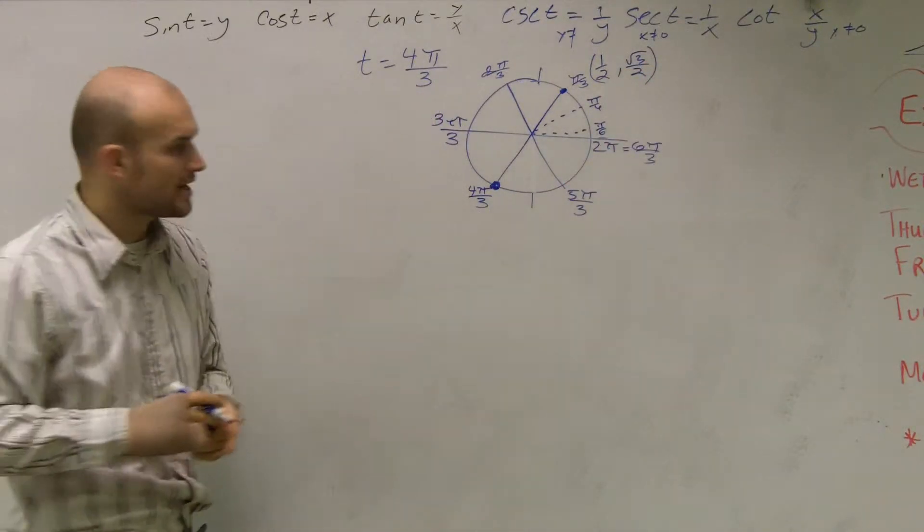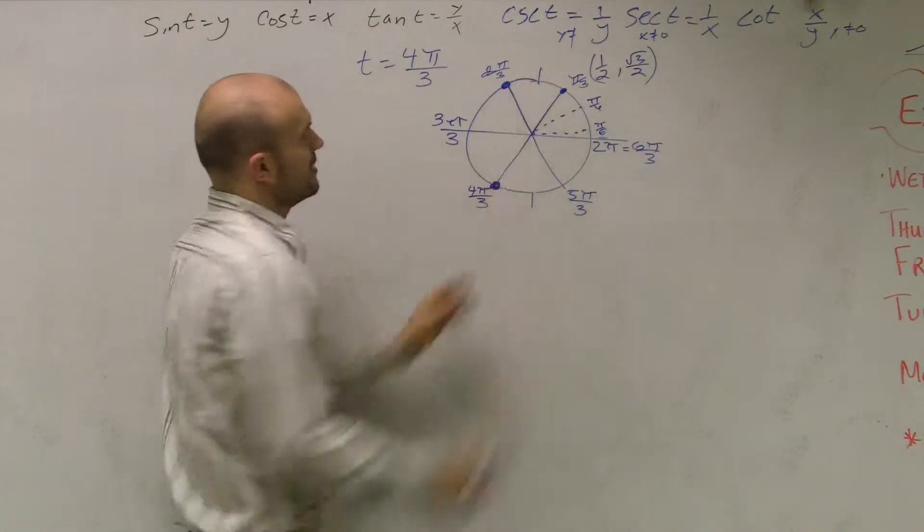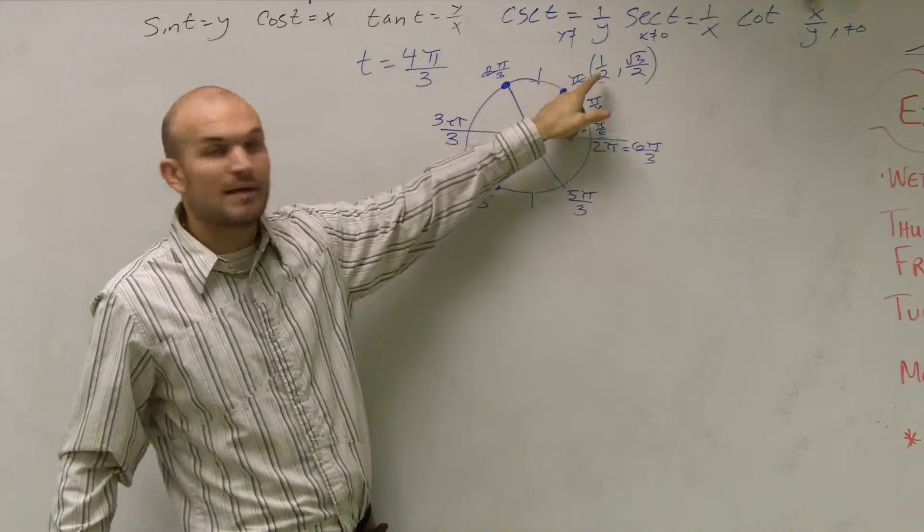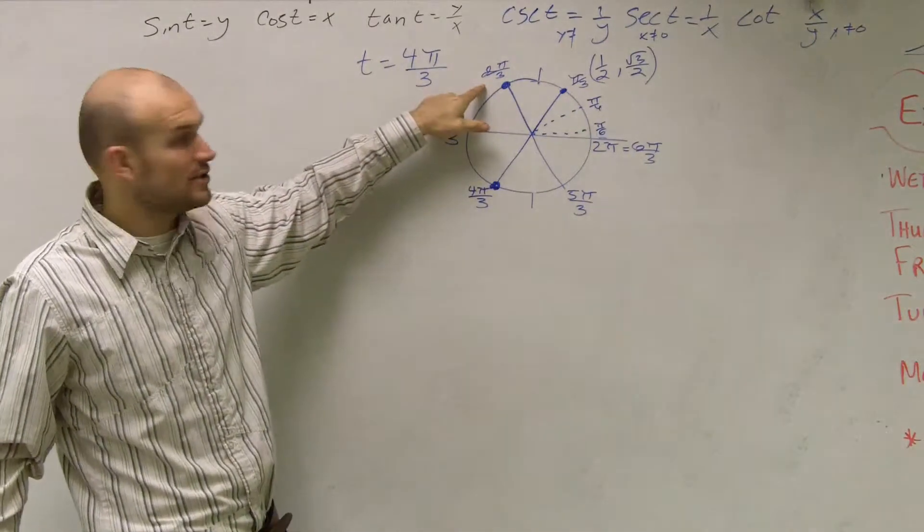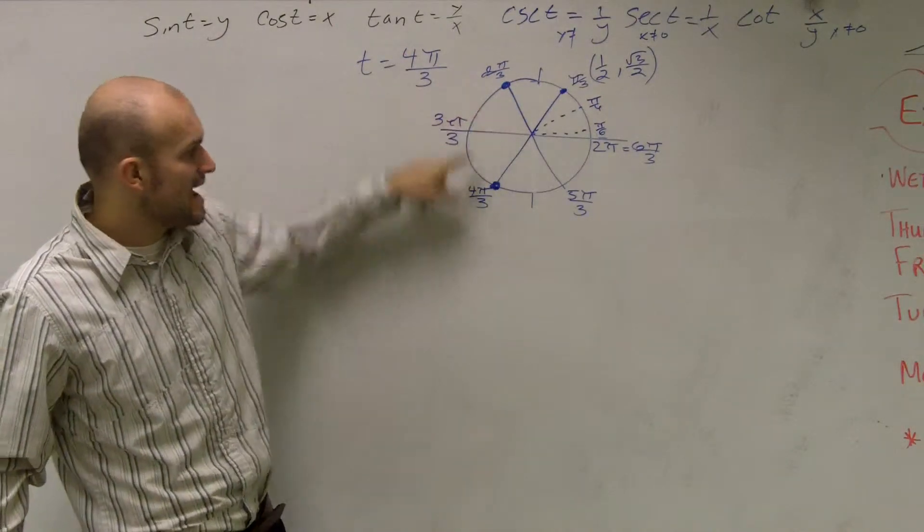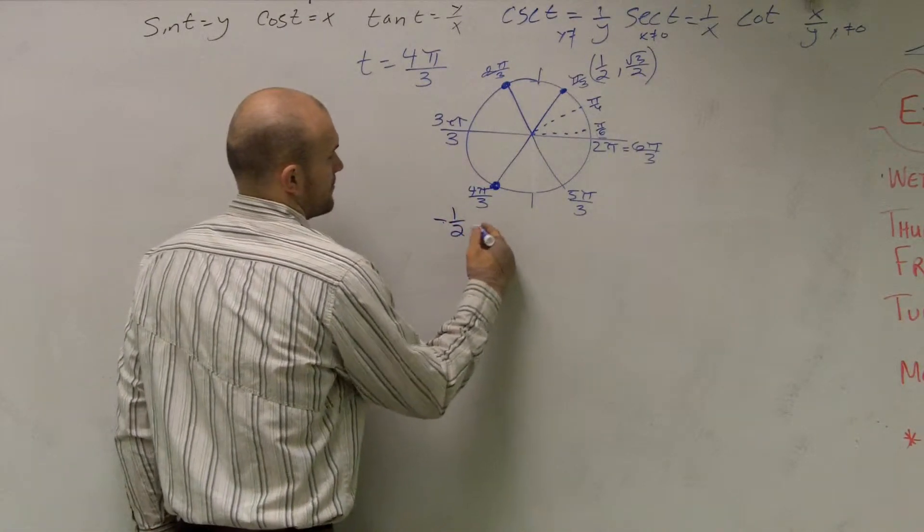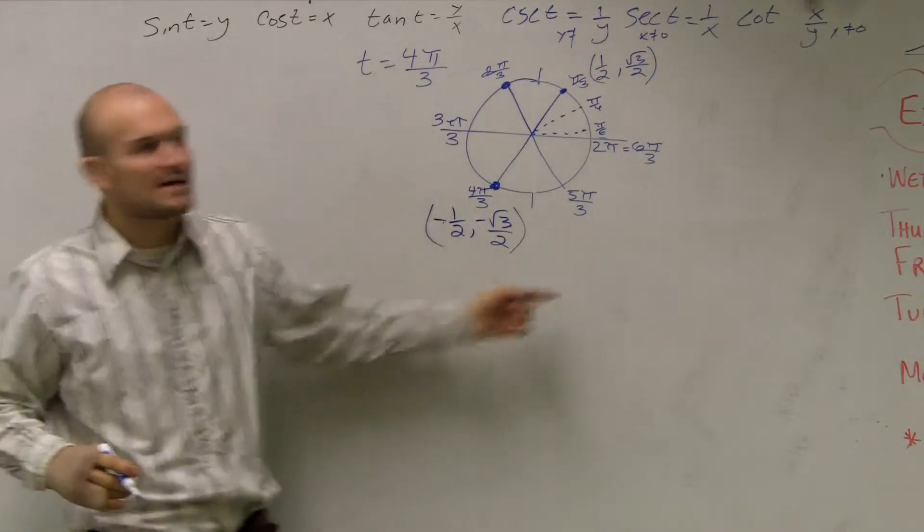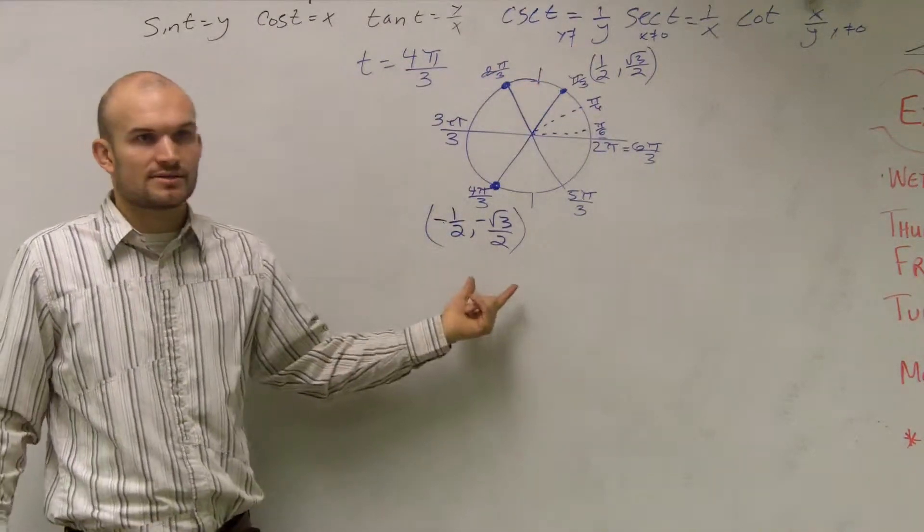You should have these absolutely memorized because once you have these memorized, you can find where the rest of them are anywhere. So π over 3 is, let's see, that's what? 1 half times radical 3 over 2. Right? Okay. So how do I know what this one is? Well, let's look about it this way, guys. If I take this point, 2π over 3 is just a reflection about the y axis, meaning my x is now negative.